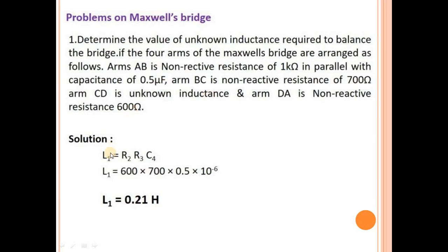Arm CD is connected with unknown inductance L1. Arm DA is non-reactive resistance. So L1 = R2 × R3 × C = 600 × 700 × 0.5 × 10⁻⁶. Calculating gives L1 = 0.21 henry.